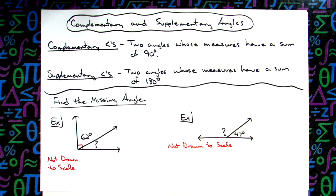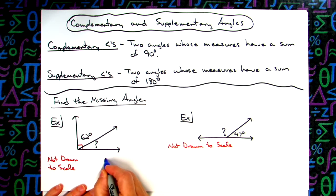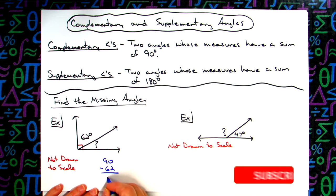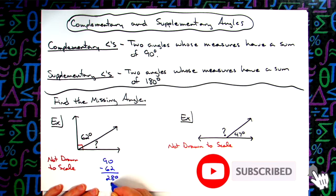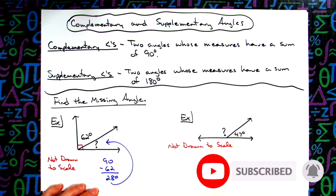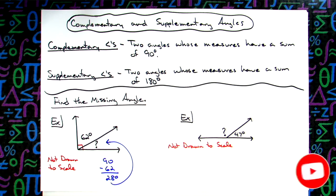This would be a picture of complementary angles, so the two angles add up to 90 degrees. So then it's just a matter of taking 90 minus that 62 and then you'll get 28 degrees there for that missing angle.